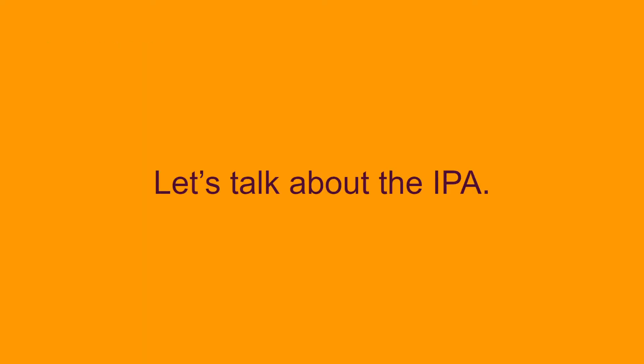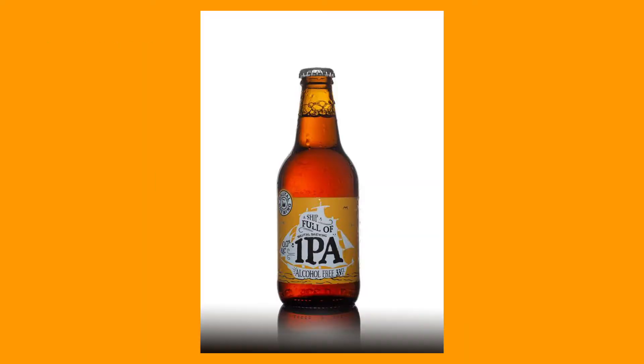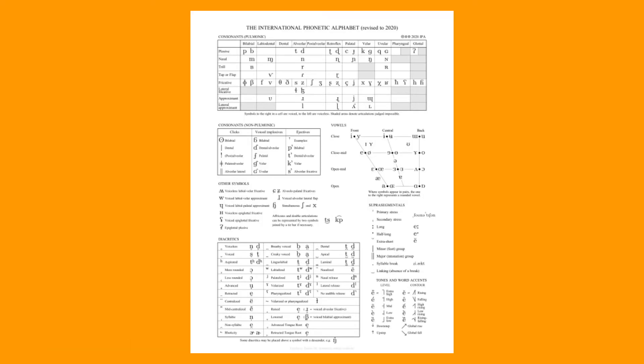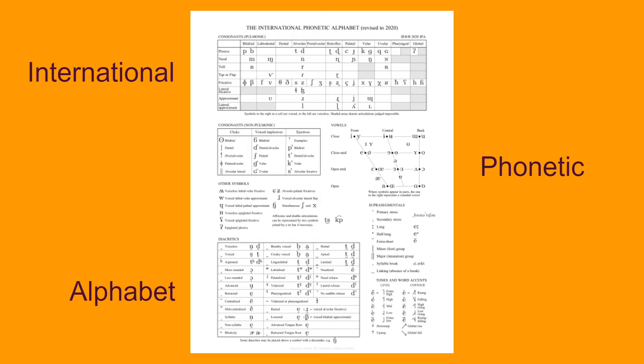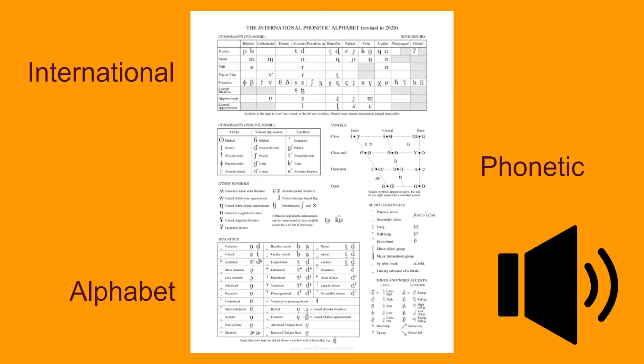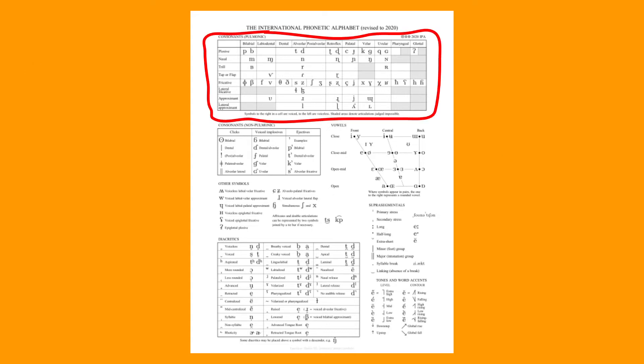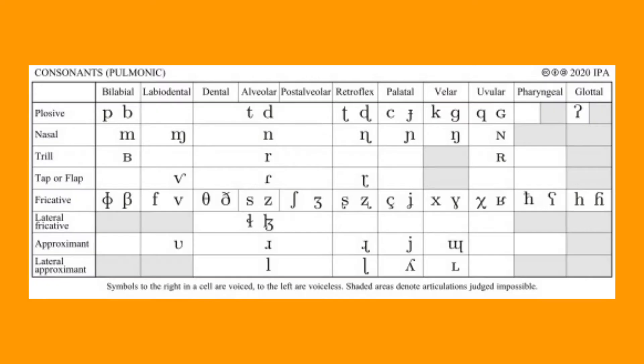Let's talk about the IPA. The IPA — no, not that IPA — this IPA: the International Phonetic Alphabet, is a tool used by linguists to transcribe sounds in human languages. In this video, we'll focus on this part of the IPA: the pulmonic consonants.